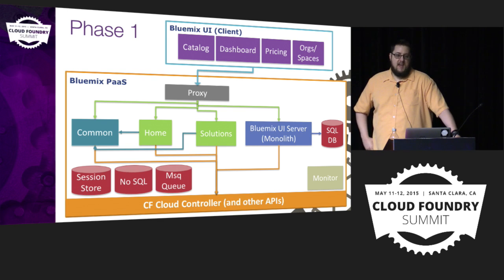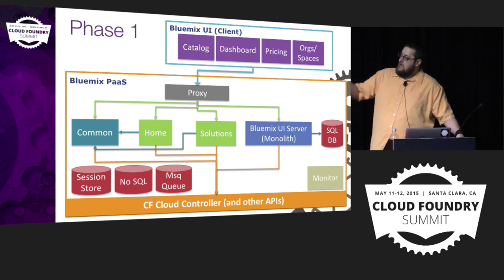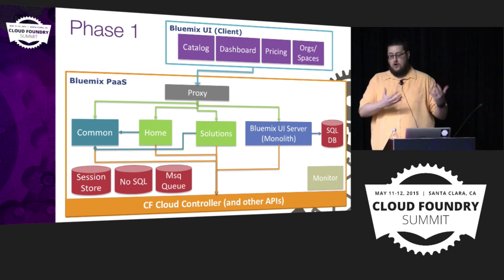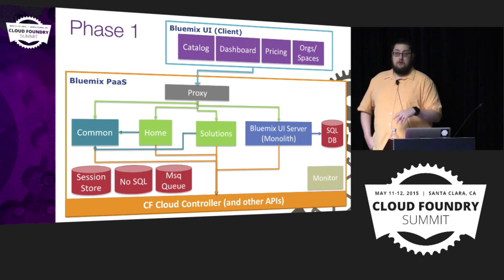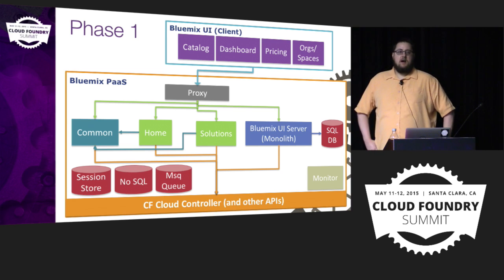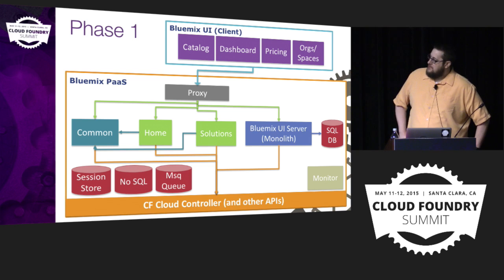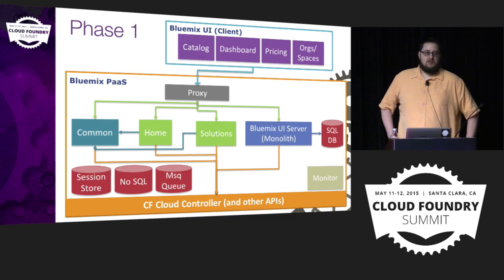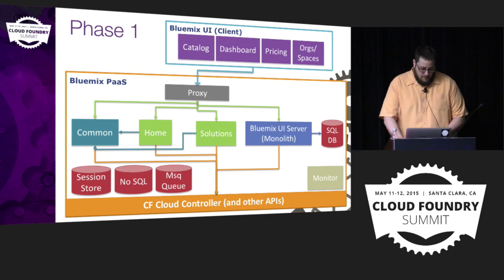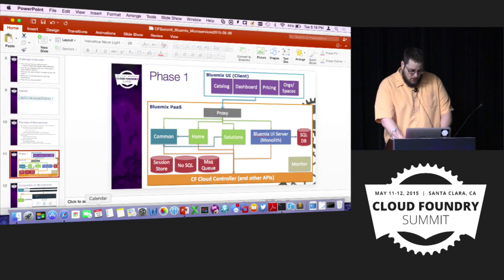Home and solutions — our more static pages — are now sitting behind the proxy. We have a common microservice intended for other microservices to call to get things like the header and footer, so that can be shared. The monolith is still there but now sits behind the proxy as well. We're also using services for session store and similar things. Let me drop into a demo to show what's live now.